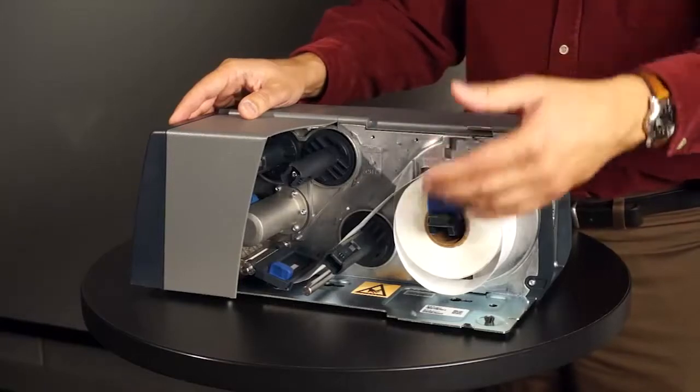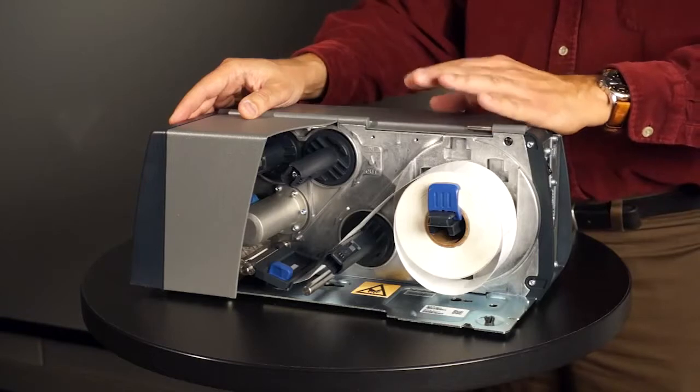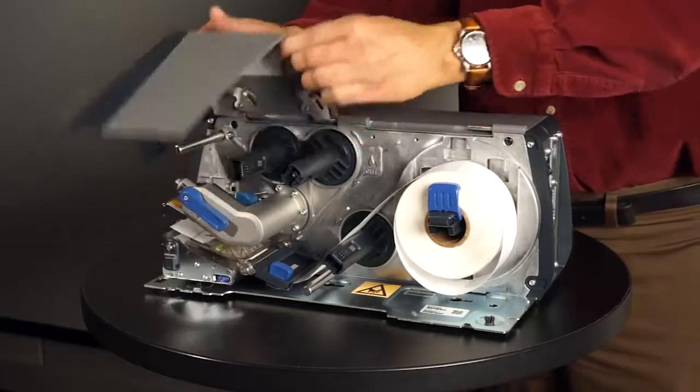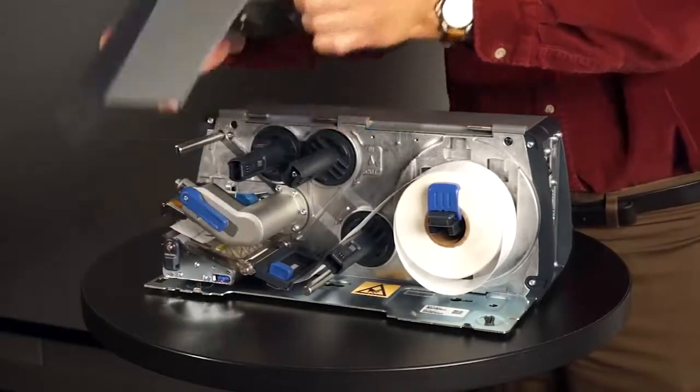Short door allows for easy media access in printing boarding passes and other media types where media does not need to be covered. It is also very easy to be replaced with a longer door.